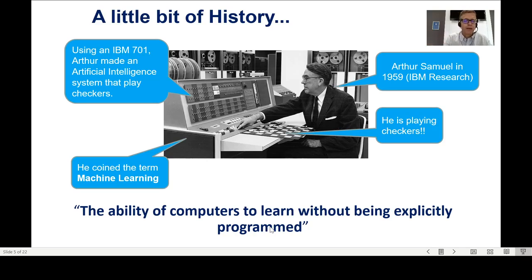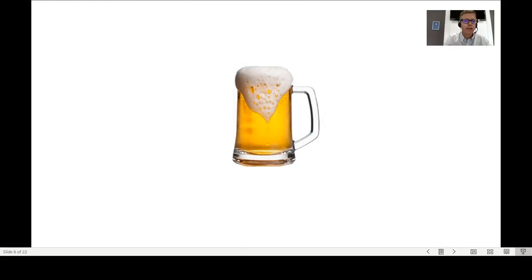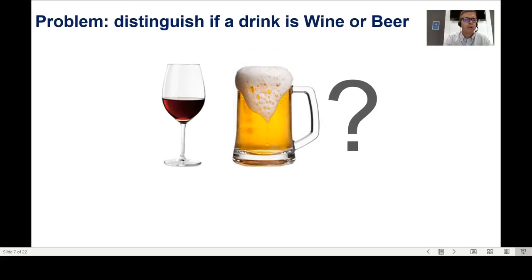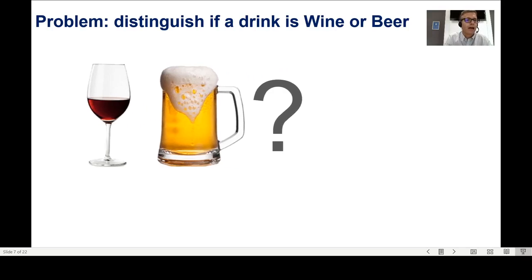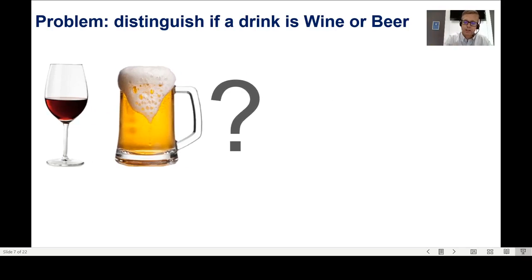A much better way to understand machine learning is through an example. And even better than a plain example is one that has beers. So I'm going to use this example: a problem to distinguish if a drink is wine or beer. I'll try to explain what machine learning is using this example.